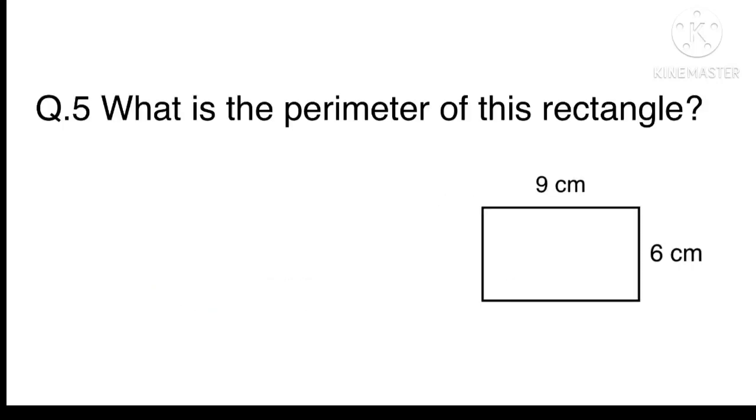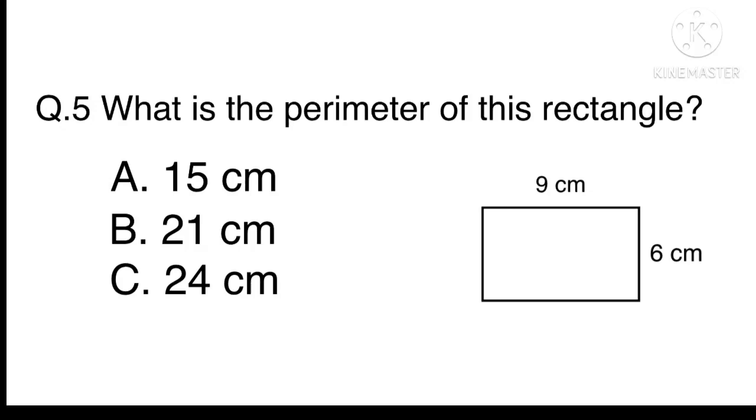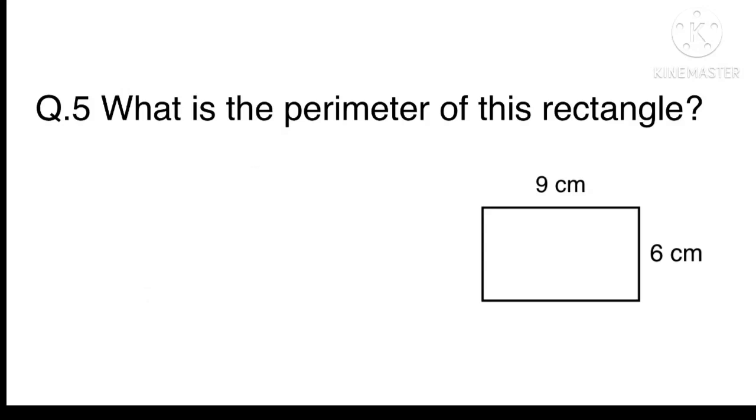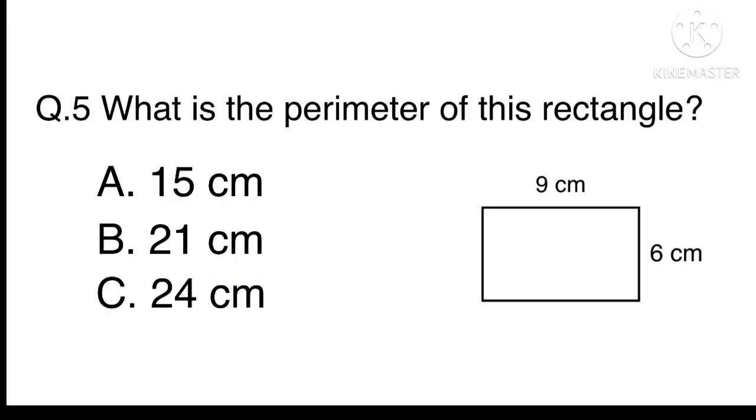Question 5. What is the perimeter of this rectangle? A. 15 centimetres B. 21 centimetres C. 24 centimetres Or D. 30 centimetres. There are two sides of 9 centimetres and two sides of 6 centimetres. This means 9 plus 6 plus 9 plus 6 equals 30 centimetres. The answer is D. 30 centimetres